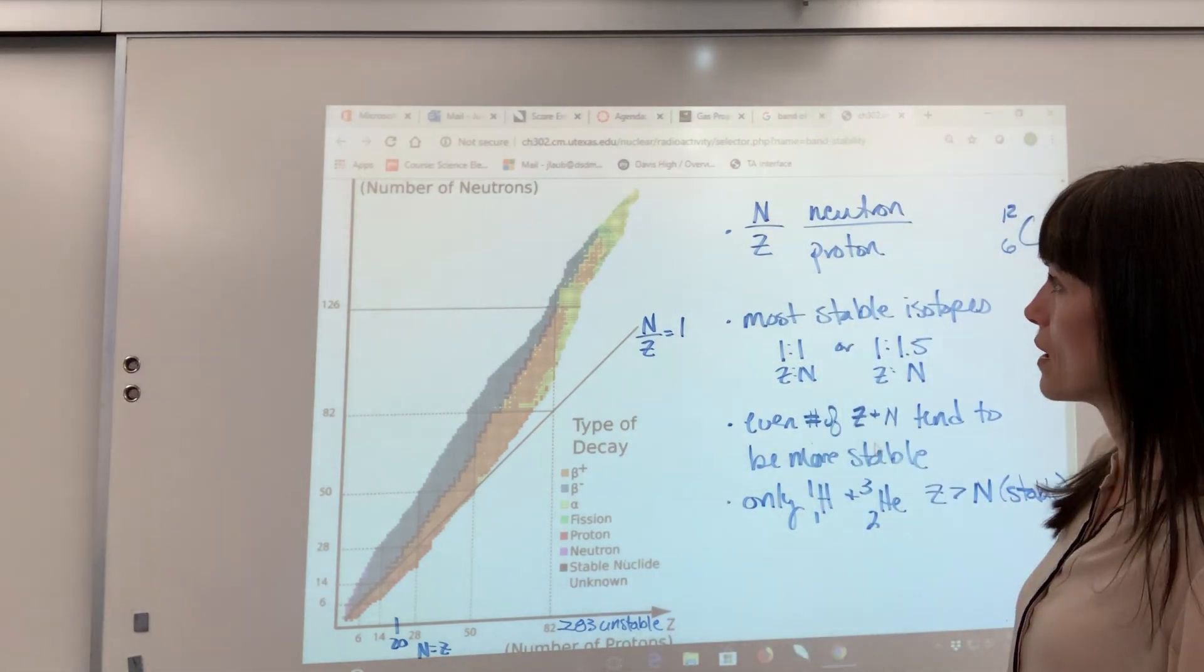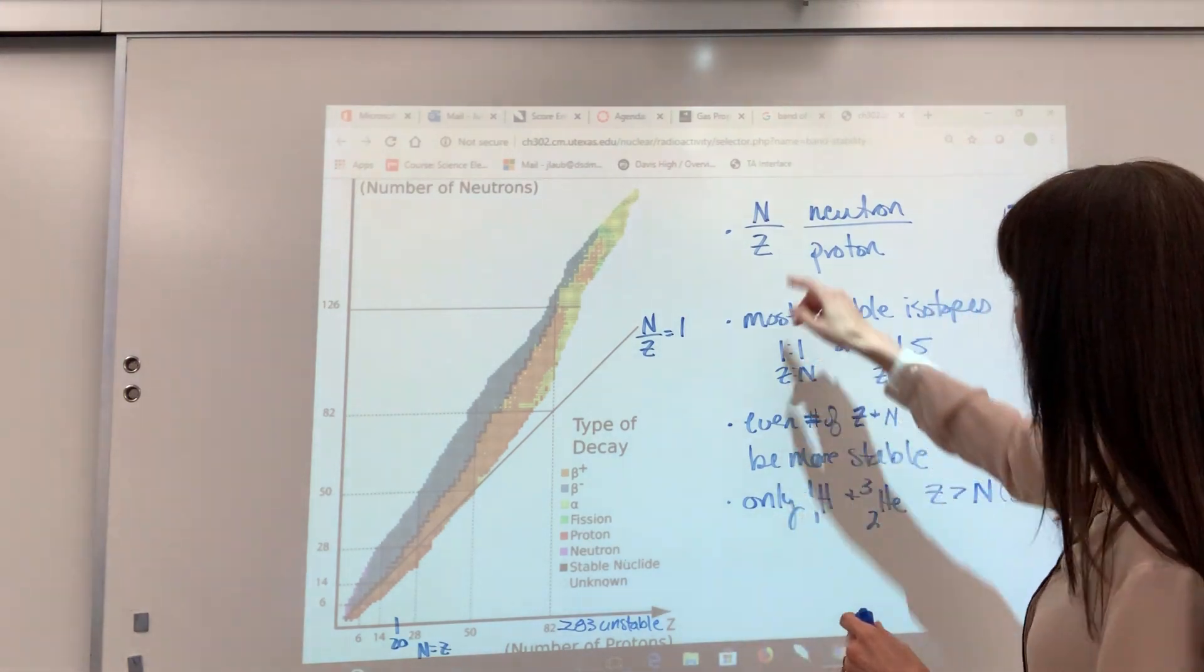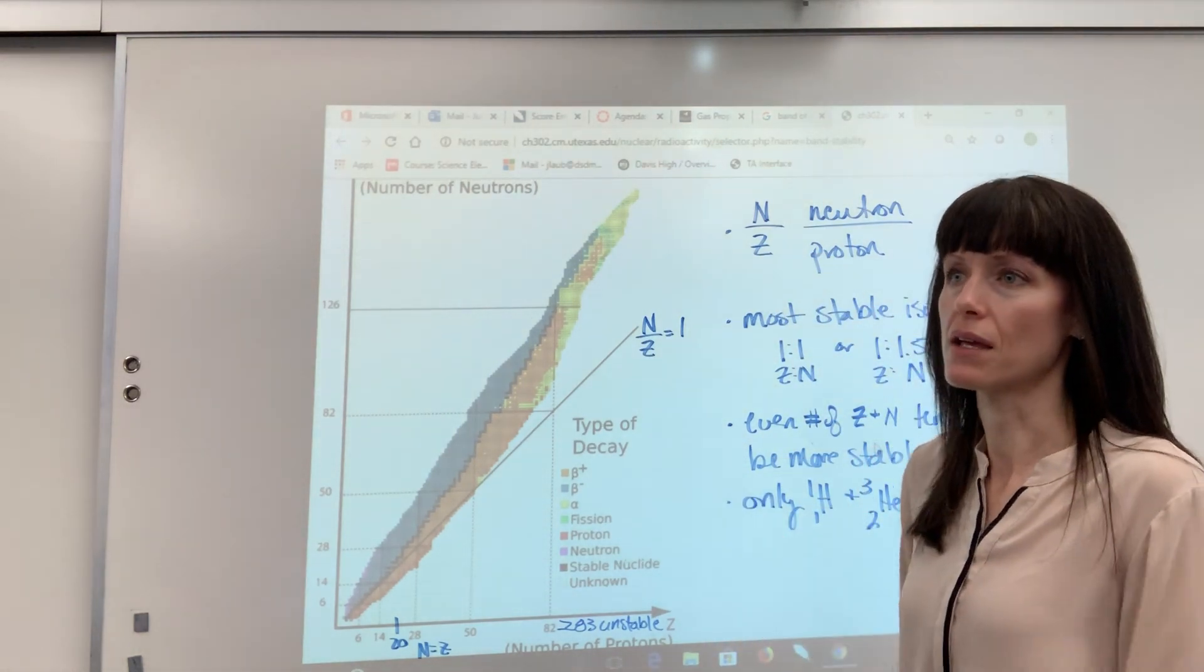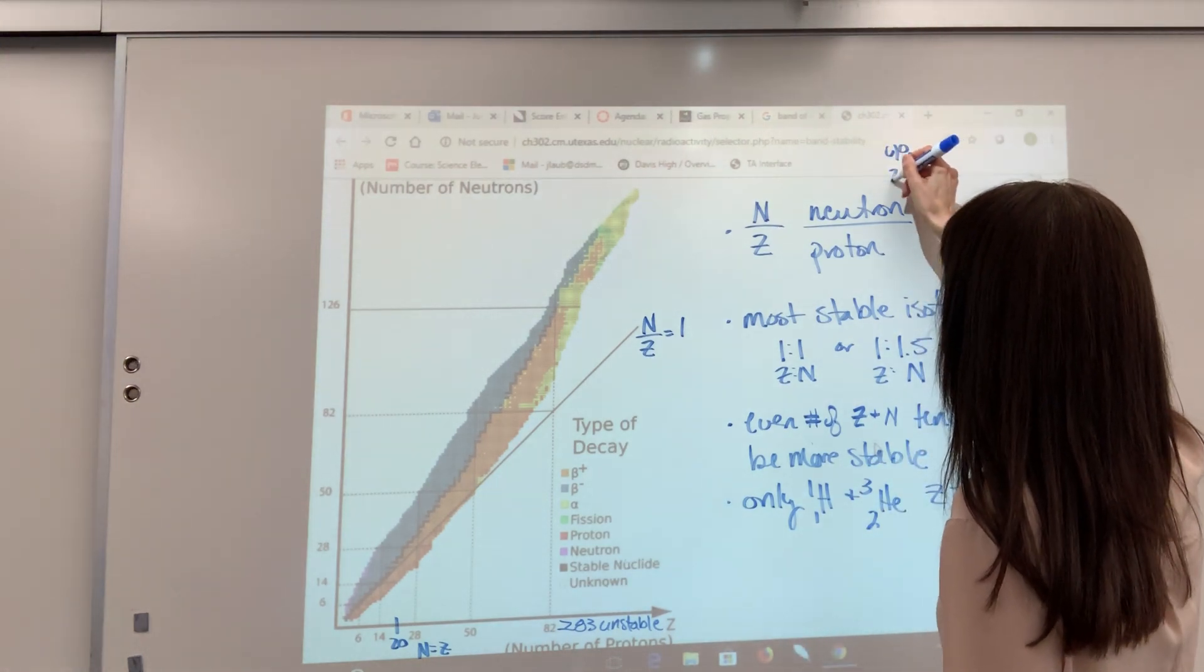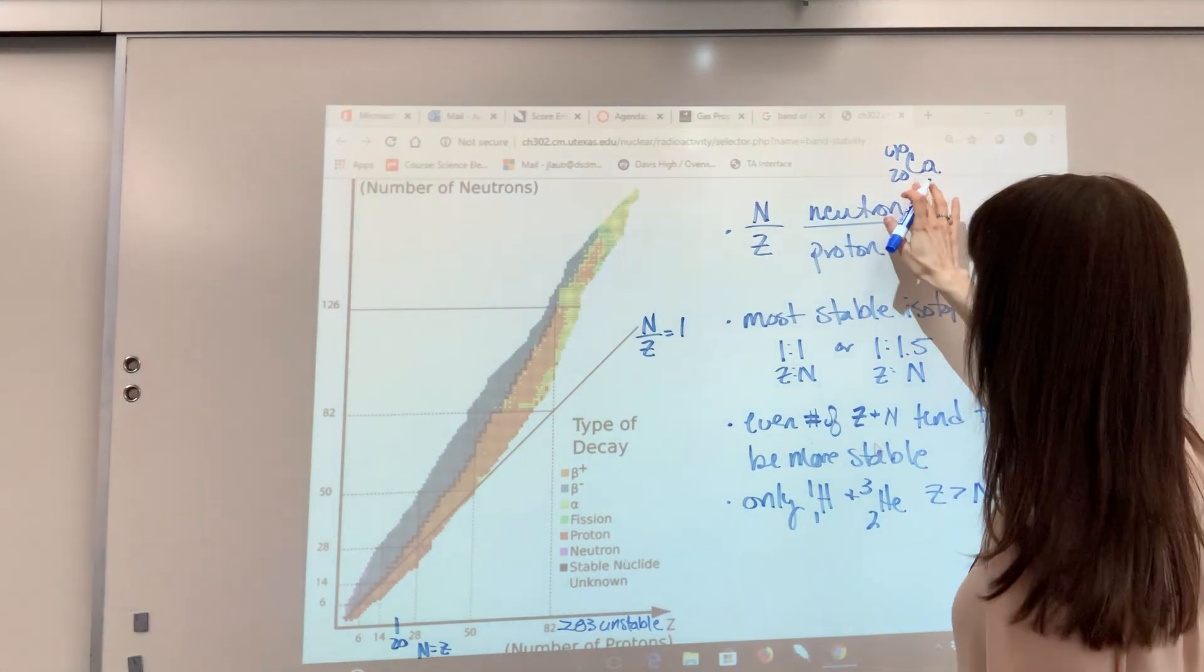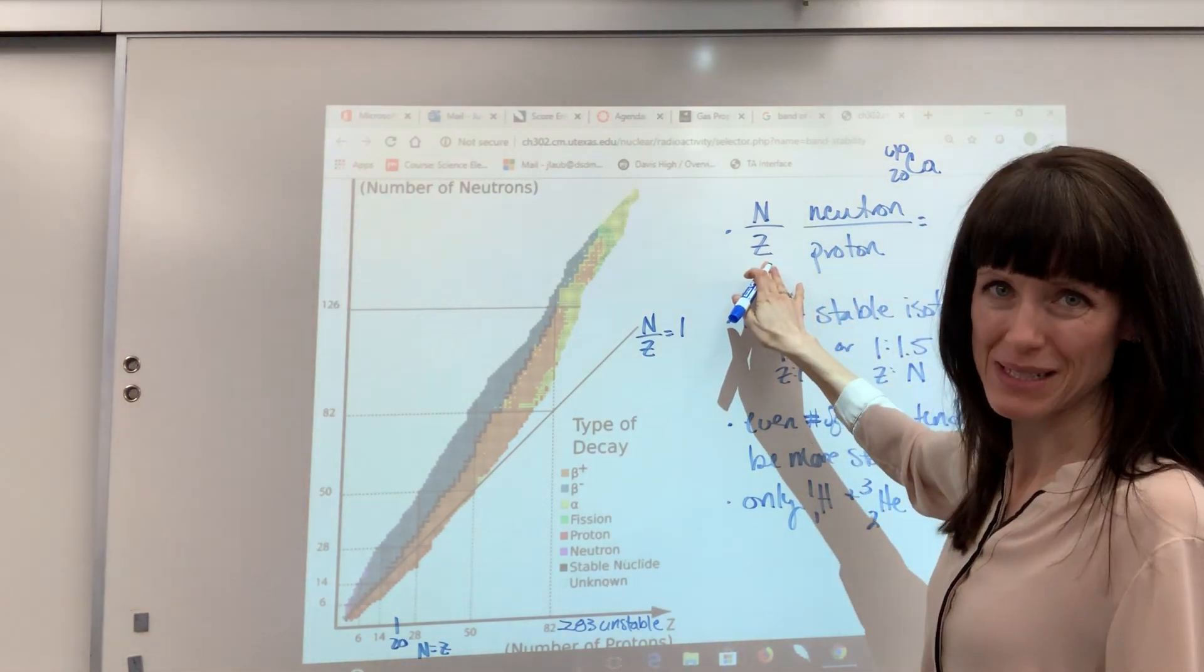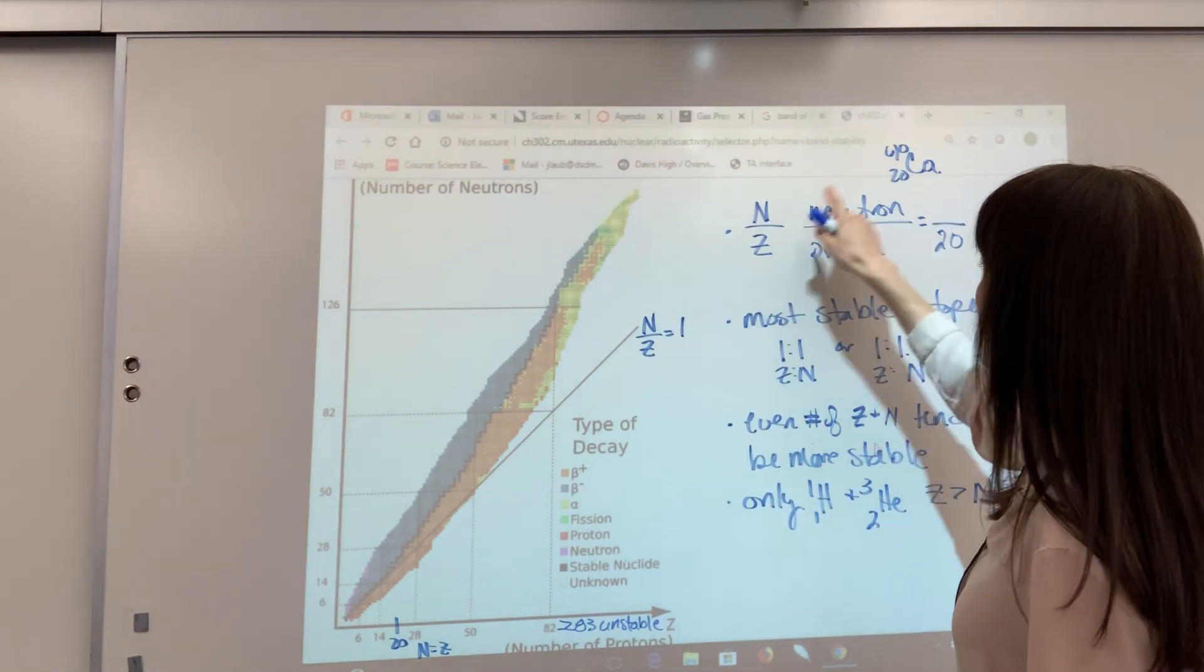So that is how you can interpret the band of stability. If you ever have to calculate the neutron-proton ratio, it's really easy. All you have to do is, so let's take a calcium 40, okay? So here's my calcium 40. All you do is take the number of protons, so there's your atomic number. That would be my P, and we use Z in nuclear chemistry to represent protons.